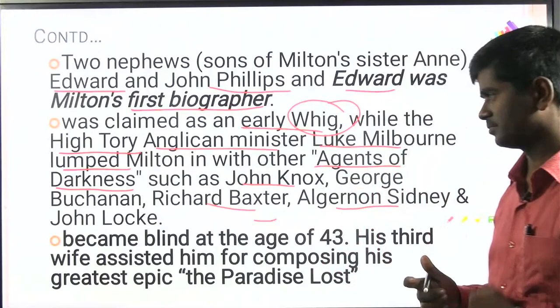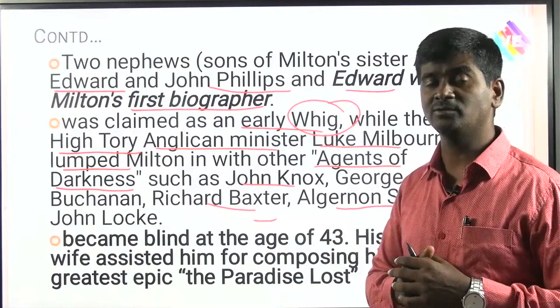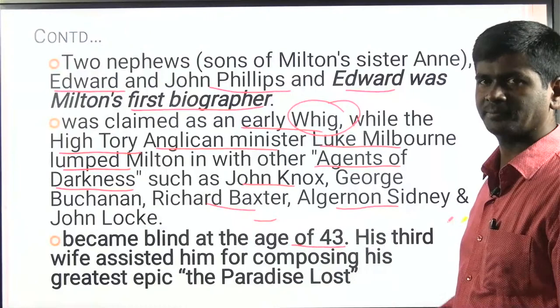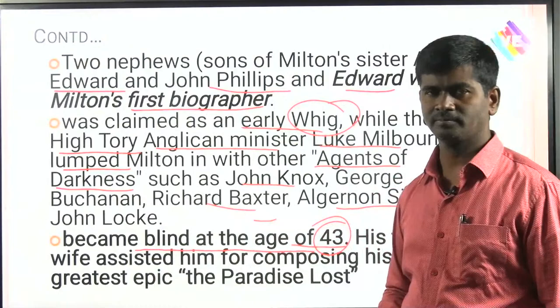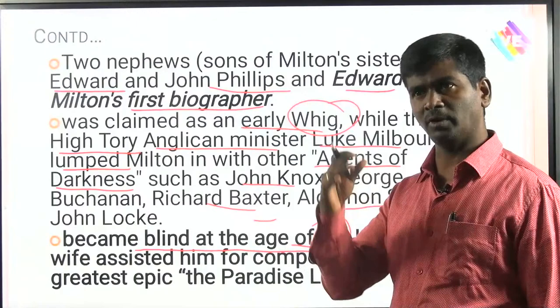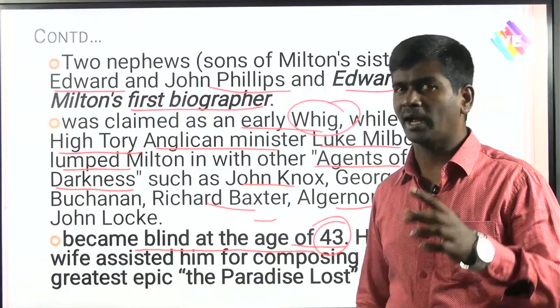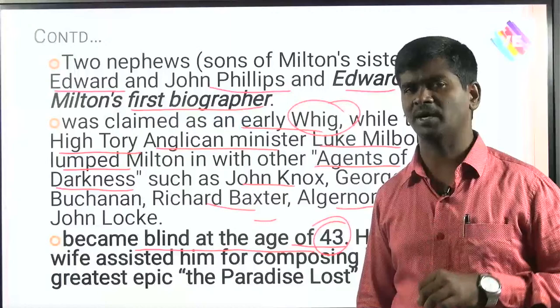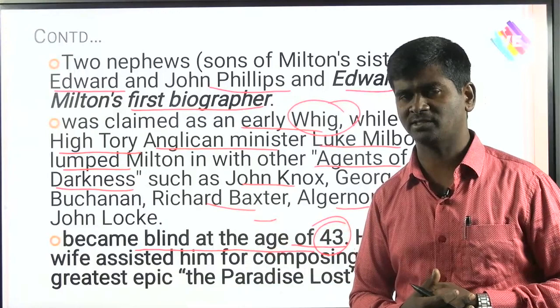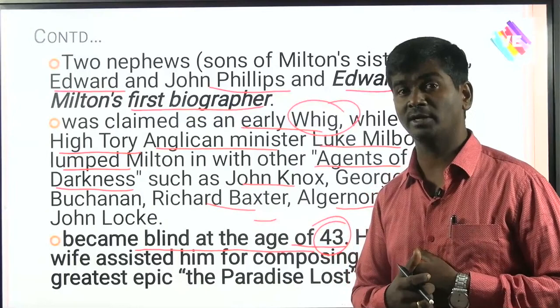A very important fact asked many times: John Milton became blind at the age of 43. This actually saved Milton from being imprisoned. After Charles II became the ruler, he punished many Puritans, Protestants, and supporters of Parliament and Oliver Cromwell. Many poets during the early Restoration period were imprisoned, but Milton's blindness saved him.